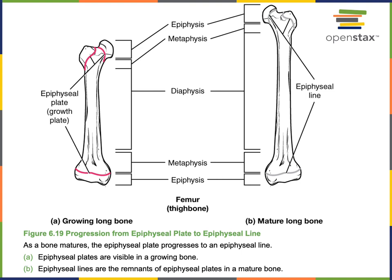Bone growth is regulated by hormones, the chemical messages secreted from endocrine glands. For example, growth hormone is secreted from the anterior pituitary gland and stimulates interstitial bone growth at the epiphyseal growth plate. During childhood, growth hormone regulates the rate at which our bones become longer. If there is excessive growth hormone signaling, this can cause bones to grow very quickly, leading to a condition known as gigantism. In contrast, if growth hormone signaling is abnormally low, this could lead to a condition known as pituitary dwarfism, where the long bones are shorter than normal.